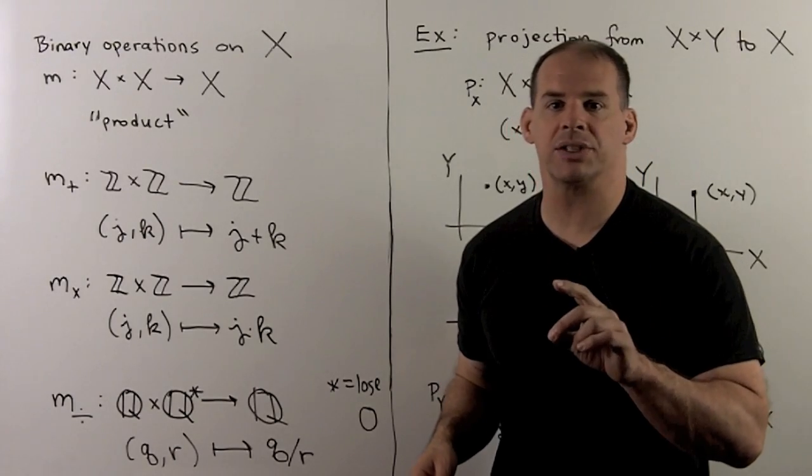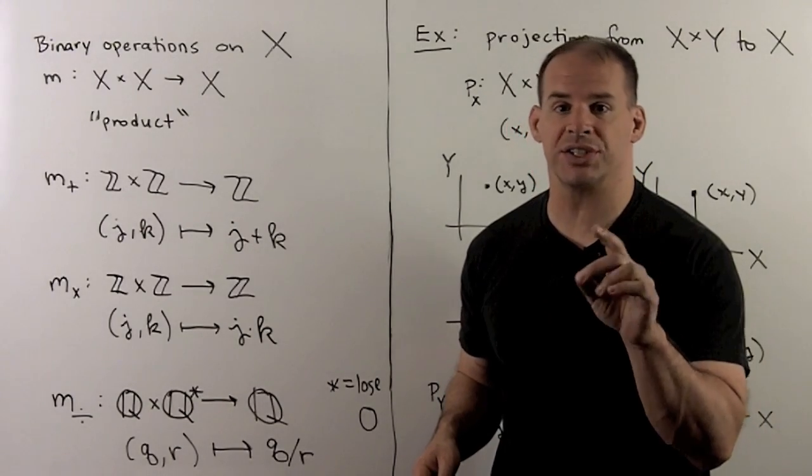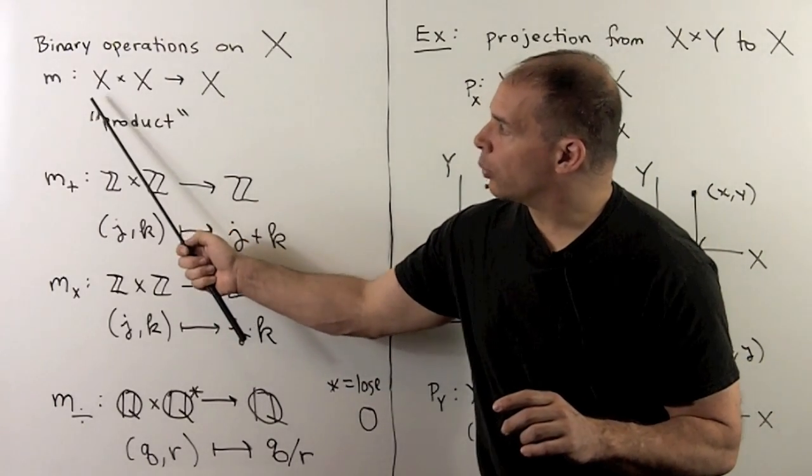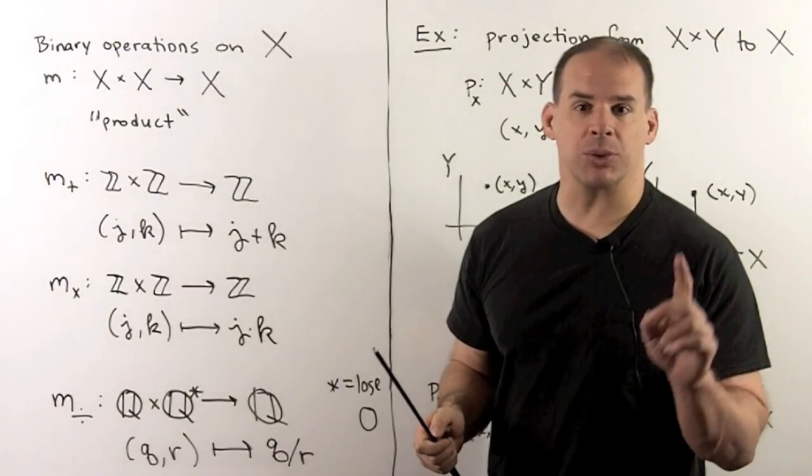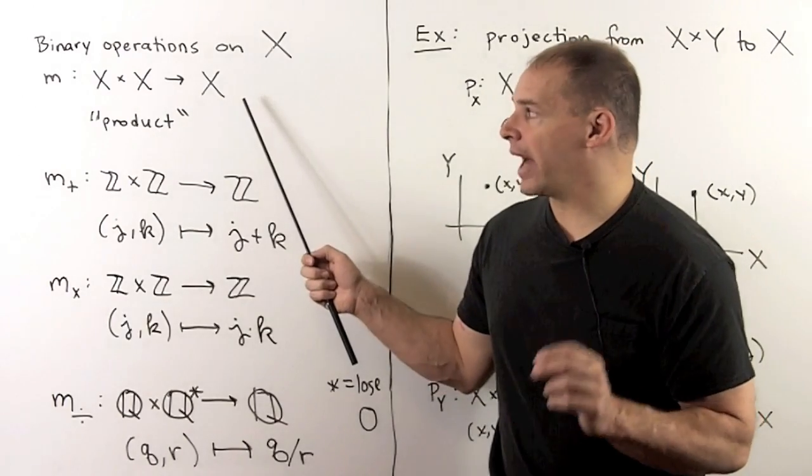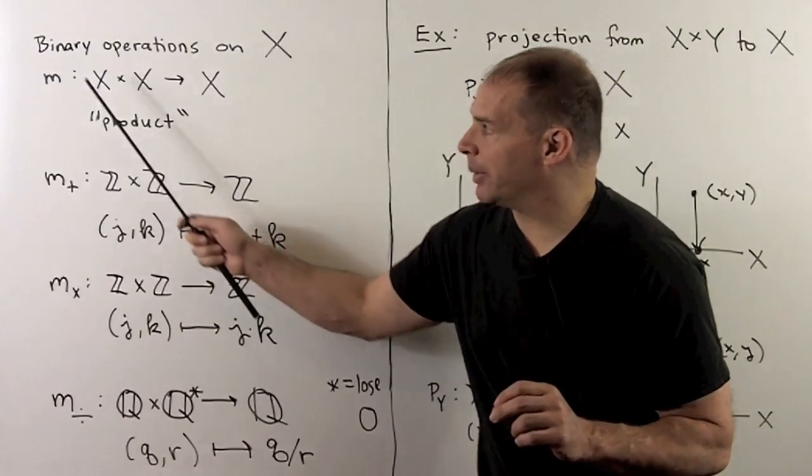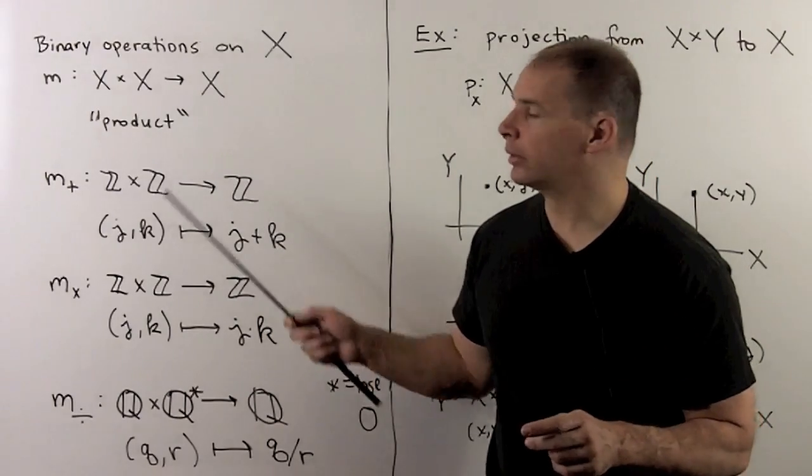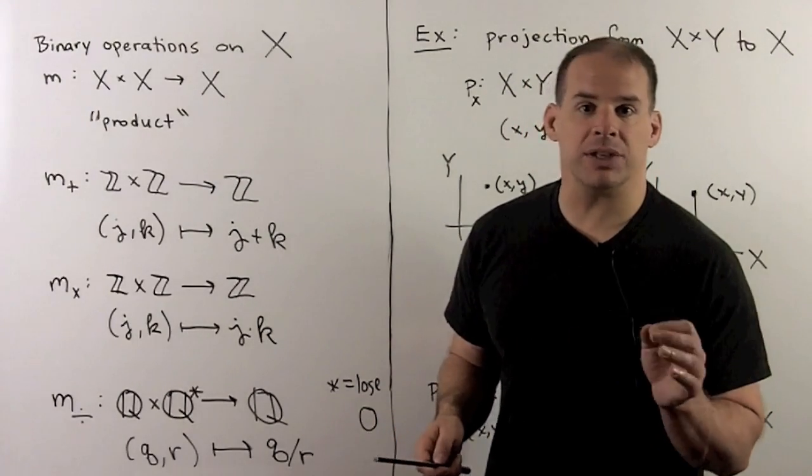Another important class of mappings are binary operations on a set x. Here, we'll assign to each ordered pair in the product of x with itself, another element of x. We'll denote this mapping by m for multiplication or product.